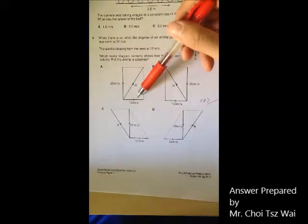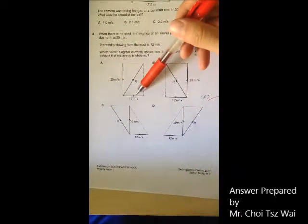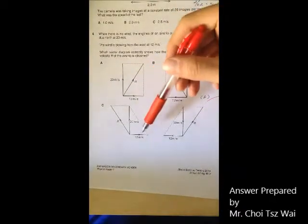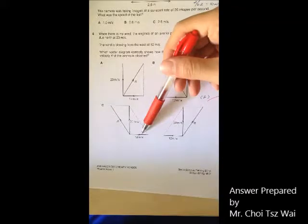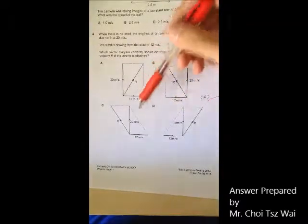So if you look at A, you can see that this horizontal force is in the wrong direction. Similarly for your C, it's in the wrong direction. So you can eliminate A and C.